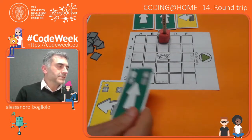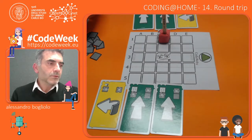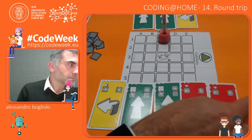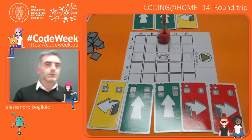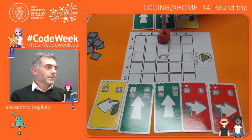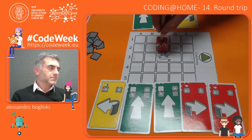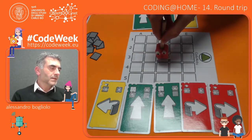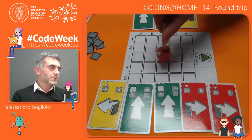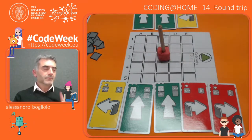We could use: turn left, then turn right, then left, forward, forward, forward, right, right — programming the return trip step by step.